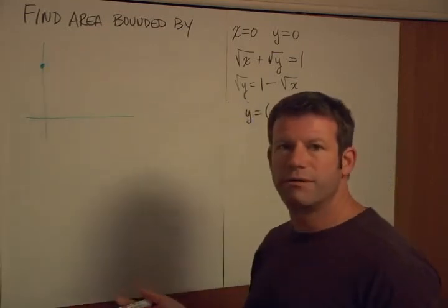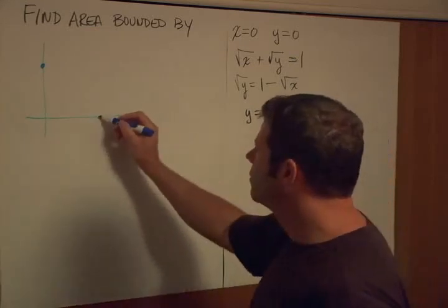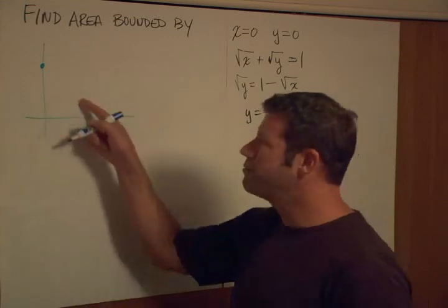Now, x equals one would be my second choice. When x equals one, we have one minus one is zero, so we have y equals zero. So the question then is, what happens in between here?